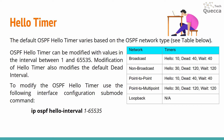Modification of the hello timer also modifies the default dead interval. To modify the OSPF hello timer, use the following interface configuration sub-mode command: ip ospf hello-interval, and then specify the value for the timer itself, from 1 to 65535.